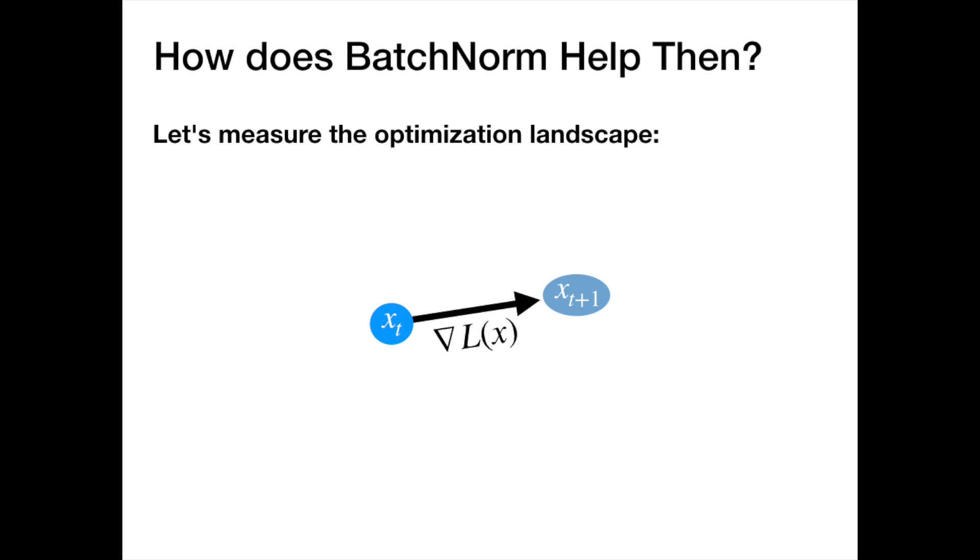What if we take a step back and start from first principles? Specifically, let's look at the optimization landscape induced by batch normalization. Let's say we're at some point in our training and our parameters have value xt. Taking a step in the gradient direction leads us to the next parameter xt plus 1.